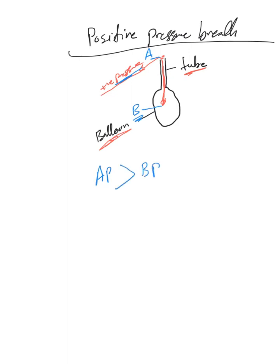You're creating that pressure gradient, and when A is higher than B, the air starts flowing in. The same thing - this is the trachea going into the lungs.